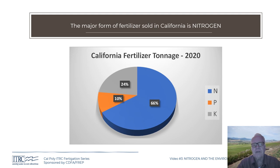Now, on to fertilizer specifics. From this pie diagram, about 66 percent of the California fertilizer tonnage in the year 2020 was some form of nitrogen. P and K are the other major nutrients — P is phosphorus and K is potassium.